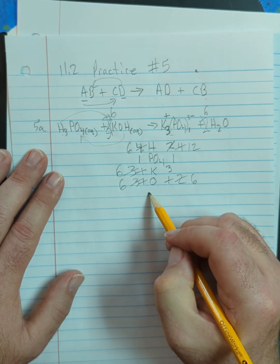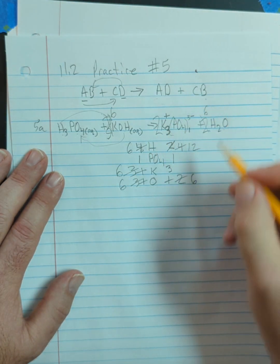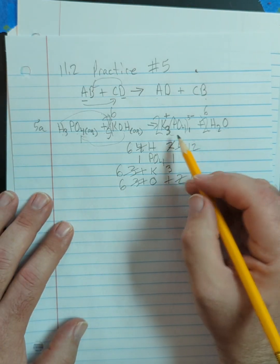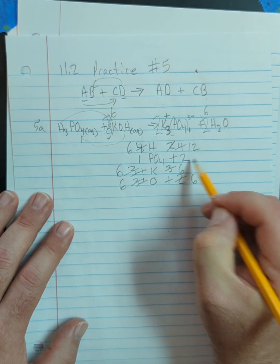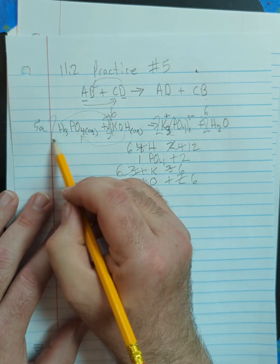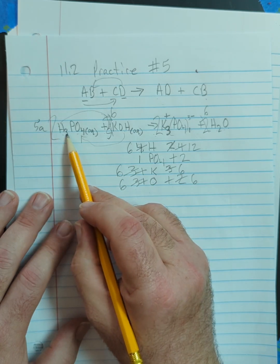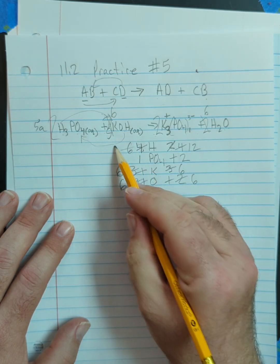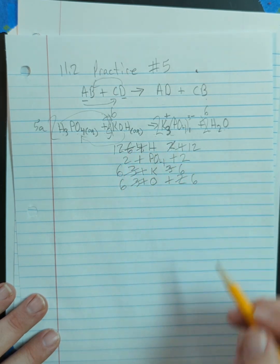Which means I'm going to put a two here. That gives me six potassium over here, and it's going to give me two PO4s. If I put a two here, now I have two times three. That's six plus six hydrogens. So that gives me 12 hydrogens, and it gives me the two PO4 that I need.